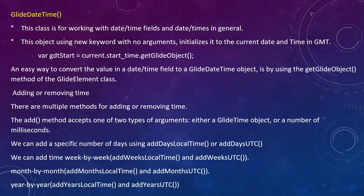There are multiple methods available with GlideDateTime. We can use the add method, which accepts two arguments: a GlideTime object and a number of milliseconds. We can work with years, months, days, hours, minutes, and seconds as different categories. We can add a specific number of days using addDaysLocalTime.